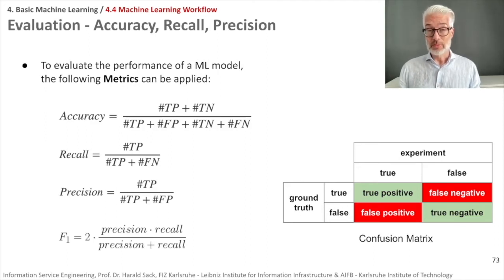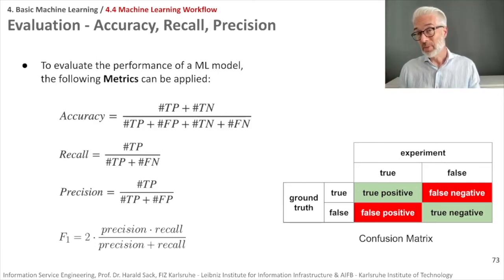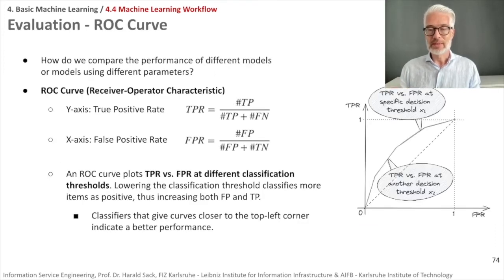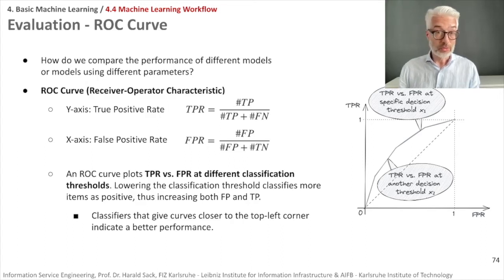When doing classification, you have to decide on specific parameters — for example, at what threshold do you interpret a result as positive or negative for a binary classifier. To evaluate or visualize the performance of your model depending on these parameter choices, you use the ROC curve — the Receiver Operating Characteristic. On the x-axis you have the false positive rate, on the y-axis the true positive rate. The true positive rate is the number of true positives divided by true positives plus false negatives; the false positive rate is false positives divided by false positives plus true negatives.